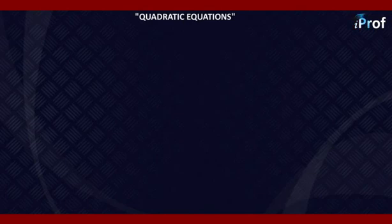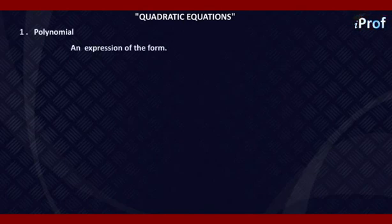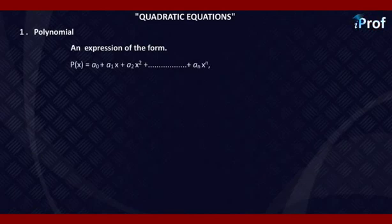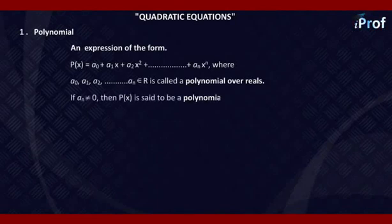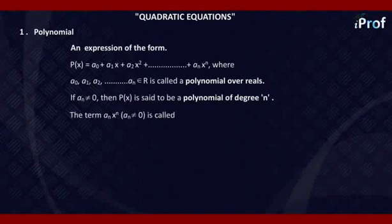First of all, we take up what is a polynomial. An expression of the form P(x) equal to A0 plus A1x plus A2x squared, and so on up to An·x raised to power n, where A0, A1, A2, and An belong to R, is called a polynomial over reals. If An is not zero, then P(x) is said to be a polynomial of degree n. The term An·x raised to power n, where An is not zero, is called the leading term.